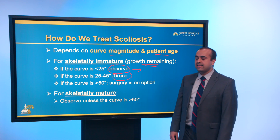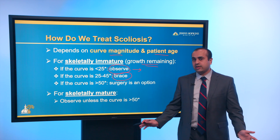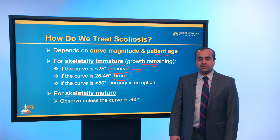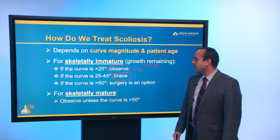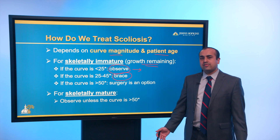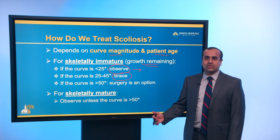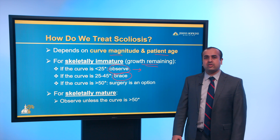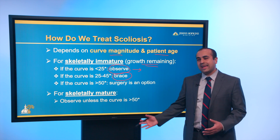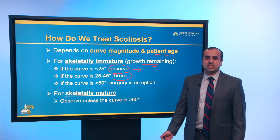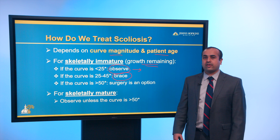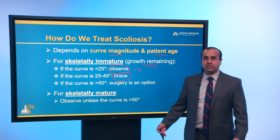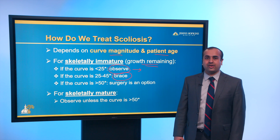If the curve is above 50 degrees, surgery can be an option — not mandatory, but it can help halt curve progression. For the skeletally mature patient, you can observe unless the curve is really large, above 50 degrees, where surgery is an option. For smaller curves the risk of progression is low, so observation is reasonable. Some patients are dissatisfied with their curve or have pain despite being skeletally mature, and surgery can be an option for curves in the 40 to 50 degree range.